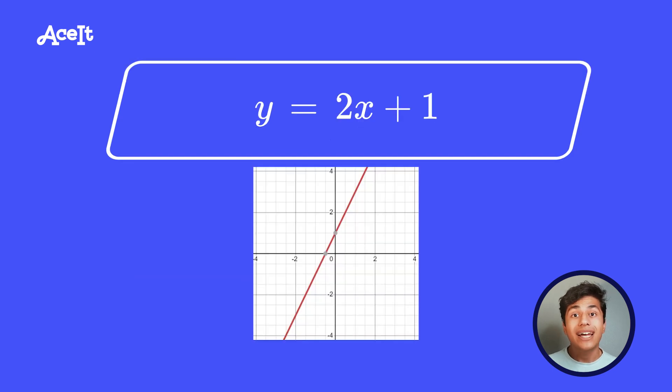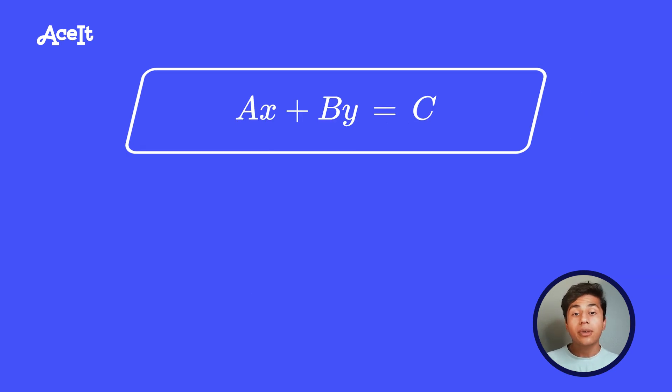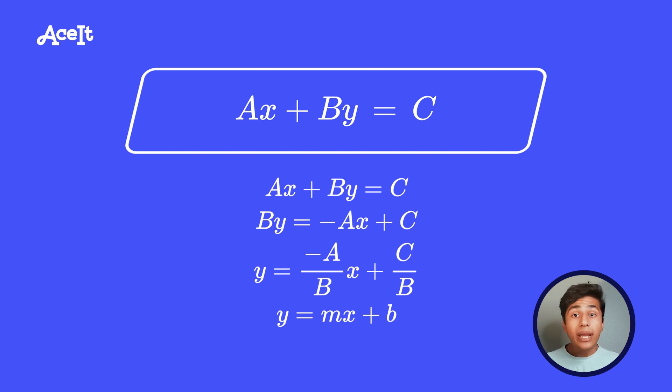You can put in a point at (0, b), and then use the slope to plot the next few points. You can also convert between standard form and slope-intercept form by rearranging standard form. So if you use your algebra skills, you can take the original ax plus by equals c and rearrange it to y equals negative a over b times x plus c over b. And that is the same thing as slope-intercept form.